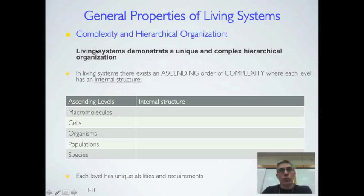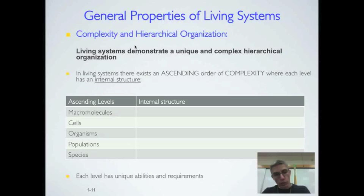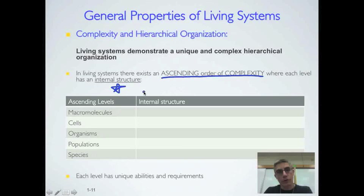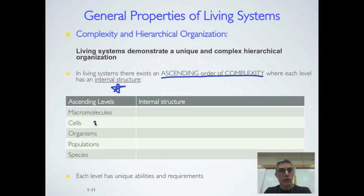The next general property of living systems is complexity and hierarchical organization. Living systems demonstrate a unique and complex hierarchical organization, with an ascending order of complexity where each level has an internal structure. Looking at the table on the left-hand side, the ascending levels are macromolecules, cells, organisms, populations, and species.